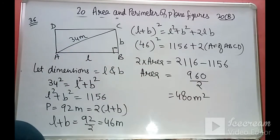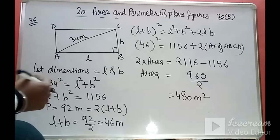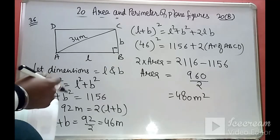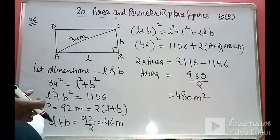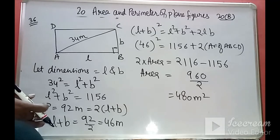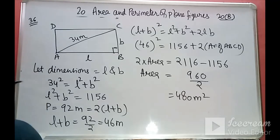By using the algebraic identity for (l plus b) squared and the given conditions, we found the area of the rectangle as 480 meter squared. This is the end of exercise 20B. Next we will discuss exercise 20C and the area and circumference of the circle.